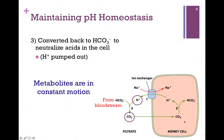Once inside the cell, CO2 can be converted back to bicarbonate and H+. Again, this happens spontaneously, but carbonic anhydrase can significantly speed up this process. Now we have the bicarbonate we need to neutralize the acid. The protons generated will get pumped back out of the cell so they don't accumulate inside. We have effectively moved bicarbonate from the filtrate into the cell, but by this rather indirect method.